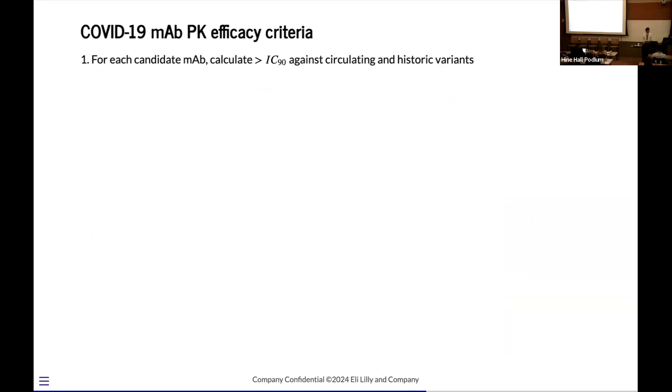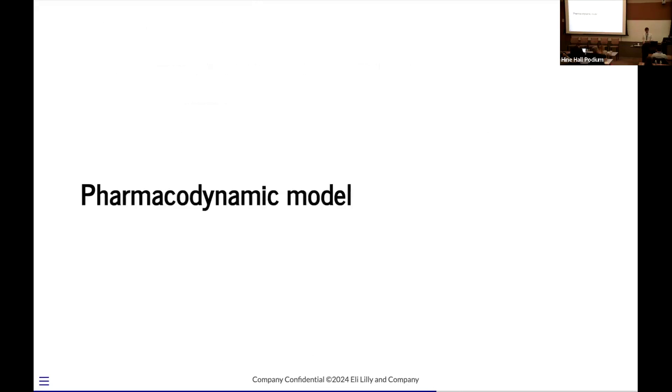So this is our first criteria that we're interested in. For any monoclonal antibody, we want to maintain concentration sufficient to meet the IC90 against any circulating and historic variants. And we're going to calculate the dose required for 90% of the population. However, we are not ultimately interested just in PK. I mean, we want to know, is our monoclonal antibody going to prevent people from getting COVID? And for this, we need to introduce a PD model.